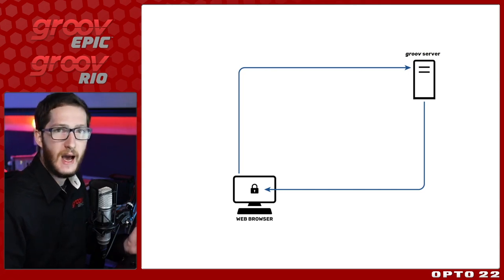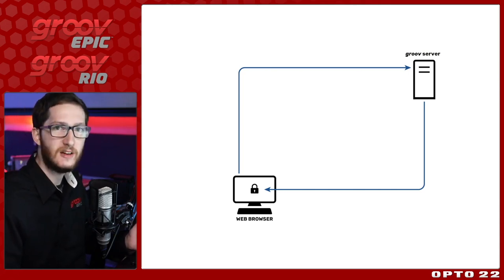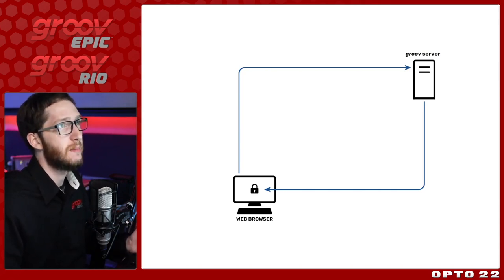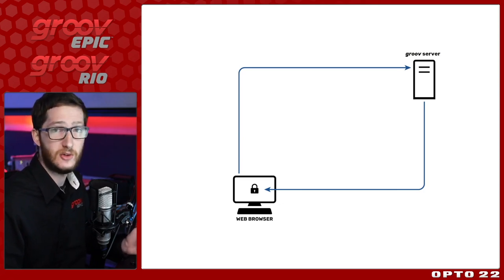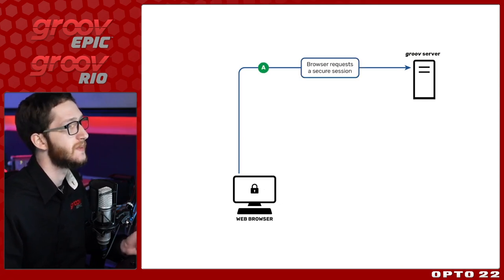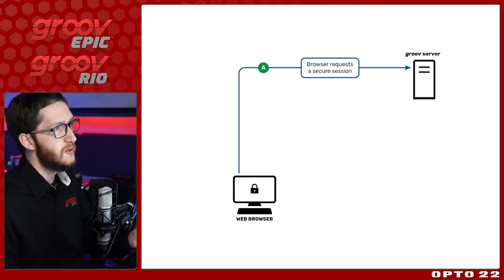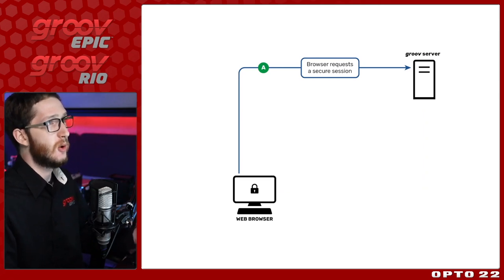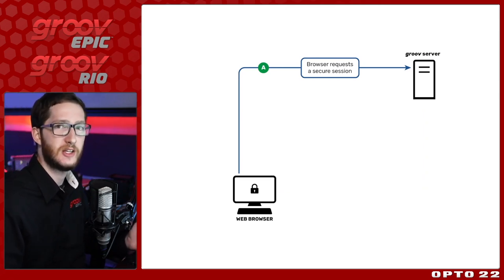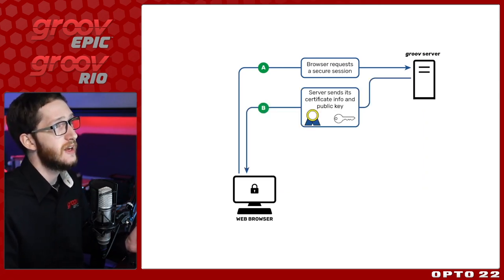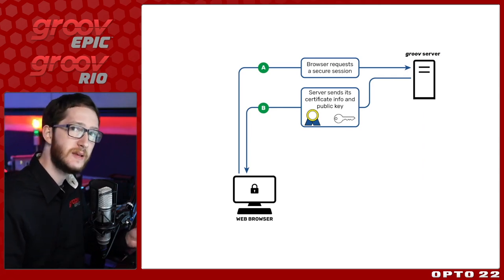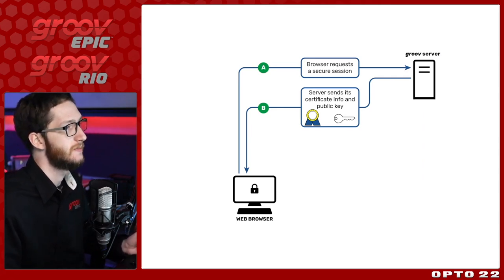There are quite a few steps that need to happen — a handshake process between the web browser and the server, in this case the Groove server. The first part is that you put in your URL and the browser requests a secure connection with that server. Then the server responds with its certificate info, and we'll actually be able to see this inside the browser in a moment.